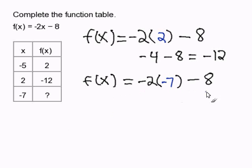And then I'm going to evaluate the equation. Negative 2 times negative 7 is 14. Subtract 8. And my resulting output is 6. And this completes my function table.